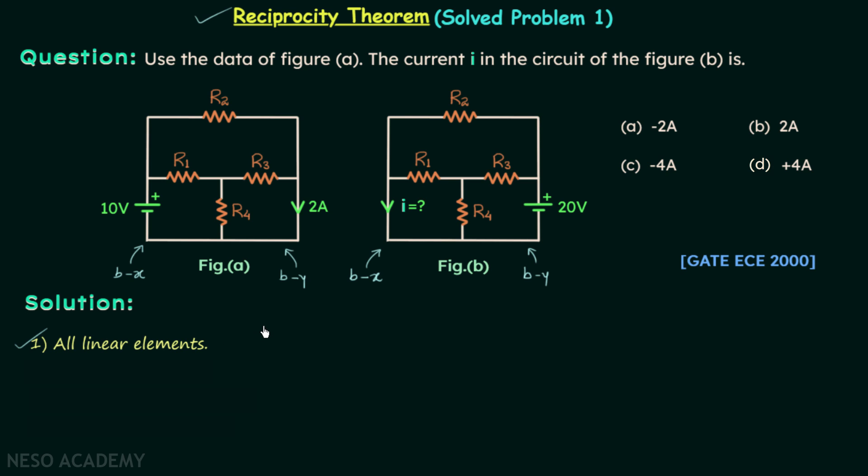Condition number 2: the ratio of response to excitation should be ohm or mho. Here this current is the response and this voltage source is the excitation. The ratio of response to excitation in this case will be current over voltage, that will be mho. So ratio of response to excitation is mho and this is allowed. This network is satisfying condition number 2 as well.